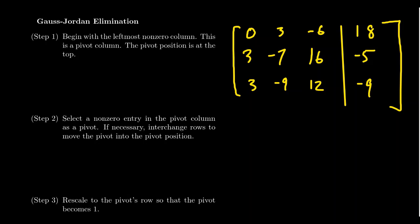The first step of Gaussian elimination is to begin with the leftmost non-zero column — this becomes the current pivot column. The pivot position will be at the very top of this column. When you look at this matrix, there are no zero columns, so the leftmost column is the leftmost non-zero column. That is typically going to be the case, and this is what we refer to as our pivot column.